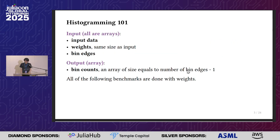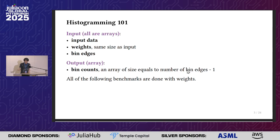If you don't know what histogramming is, here's how it works. You have input data and some weights, because your data points may be weighted. You have bin edges which define the buckets in your histogram. The output is an array one less long than the bin edges, recording how high each of those bars are if you want to visualize it. All of the actual benchmarks in this talk have weights because that's most realistic for our domain.